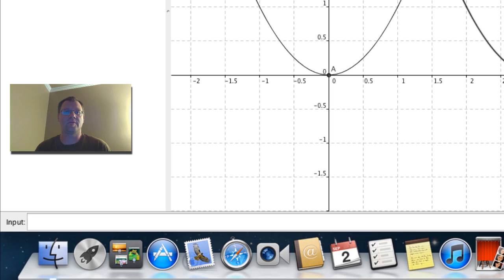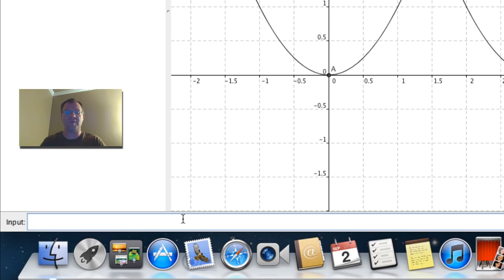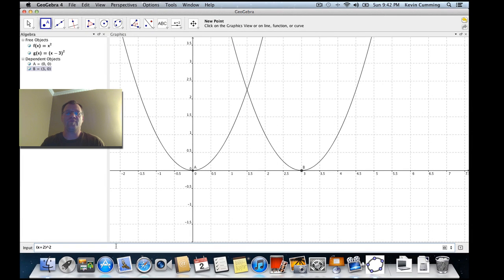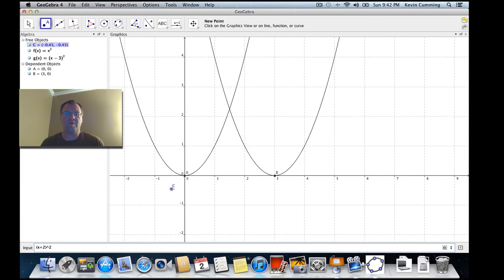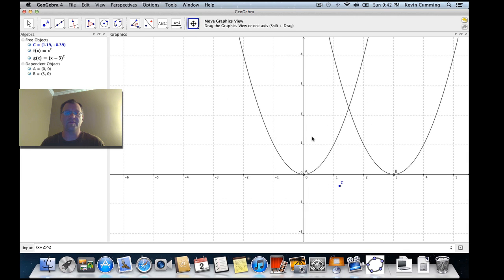that this graph, or this equation, sorry, is x minus 3 and it moves to the right three units. Well, that means that if we put in some brackets and we go x plus 2, that means our new parabola, our new quadratic should be moving to the left two units. So let's see. And there it is. We put in an x plus 2 in the brackets and our new function is moved to the left two full units.